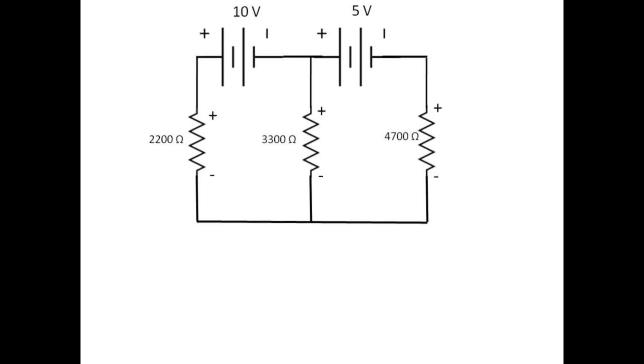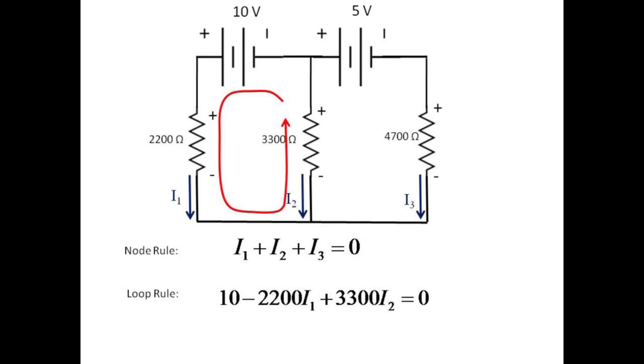We can predict the current through each resistor using Kirchhoff's rules. At the node marked in red, at the base of the circuit, we note that all currents as drawn are flowing into the node. Thus, I1 plus I2 plus I3 equals zero. Circulating around the loop shown in red, we see a voltage gain of 10 volts, followed by a drop of 2200I1 across R1, and a gain of voltage of 3300 times I2 across R2. These voltage gains and losses around the closed loop must add to zero.